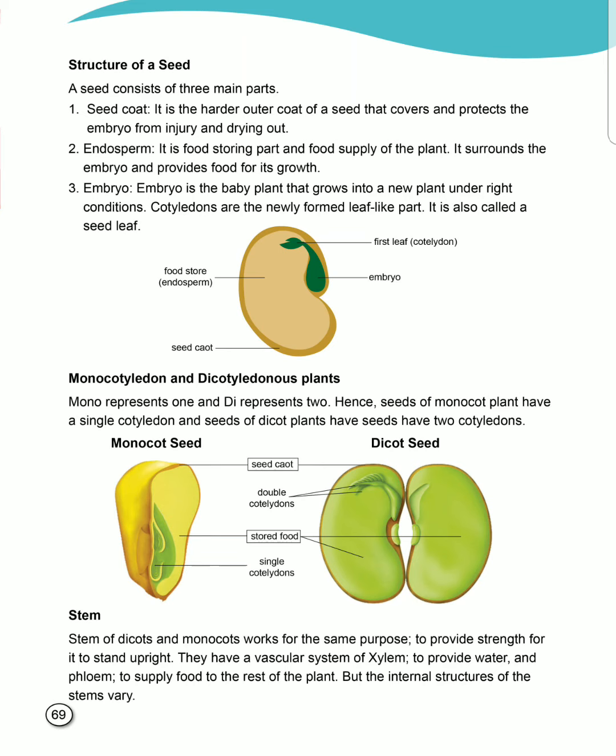The seed coat is the harder outer coat of a seed — the dark brown part — that covers and protects the embryo from injury and drying out. For the protection of the embryo from damage, the seed coat is compulsory.